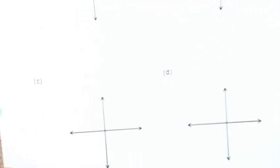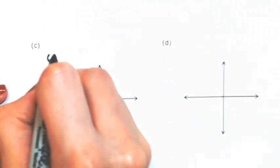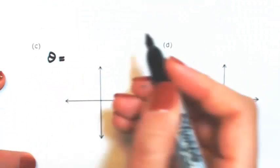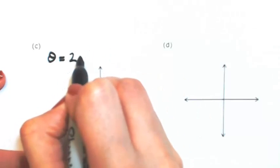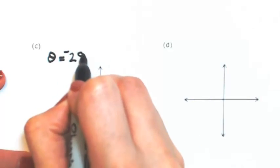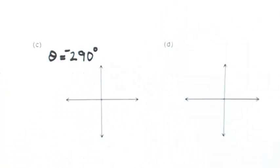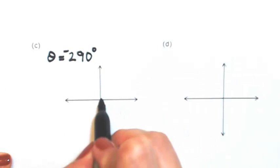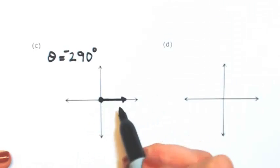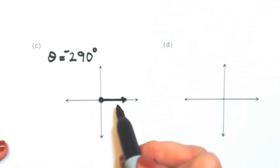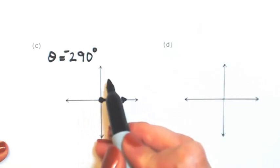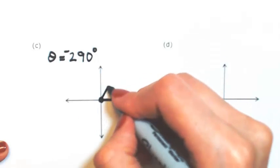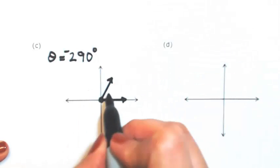Let's try a negative angle. So let's say that theta is negative 290 degrees. So starting from standard position, moving in a negative direction, we would have 90, 180, 270, so a little bit past there. Again, realize the angle is going clockwise.